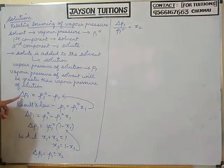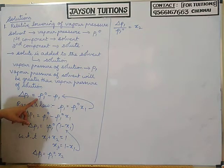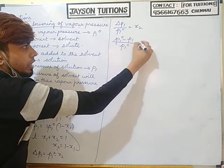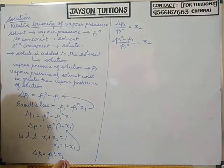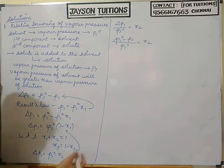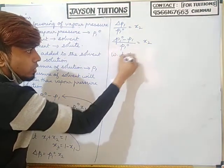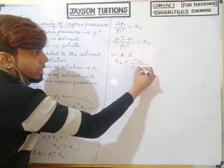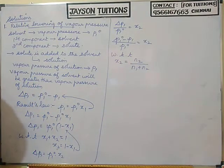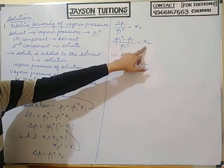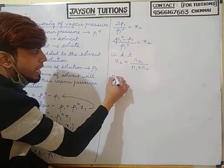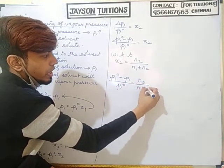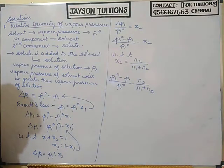So the formula is: (P1 naught minus P1) divided by P1 naught equals X2. X2 is the mole fraction of the solute. The mole fraction formula we already know: mole fraction of the second component equals number of moles of the second component divided by total number of moles. Substituting: (P1 naught minus P1) / P1 naught equals N2 divided by (N1 plus N2).